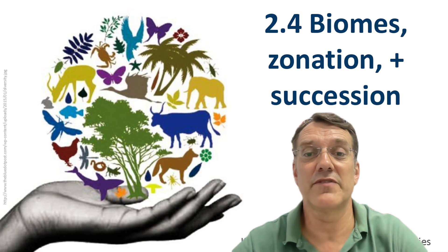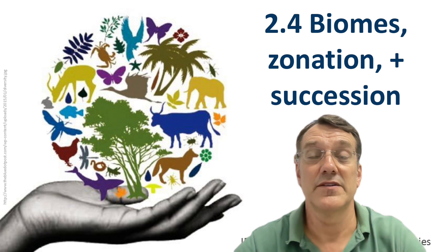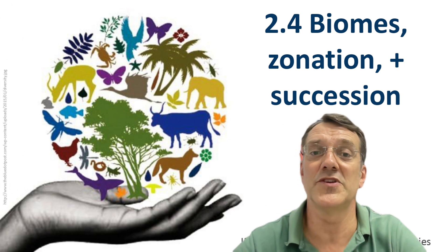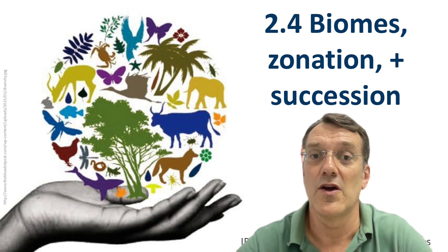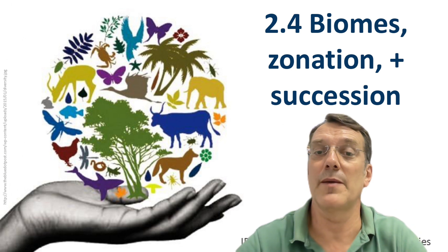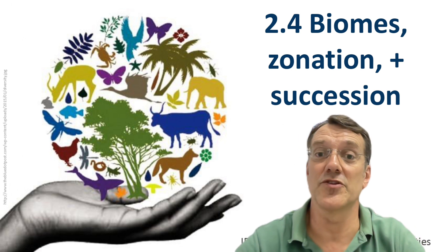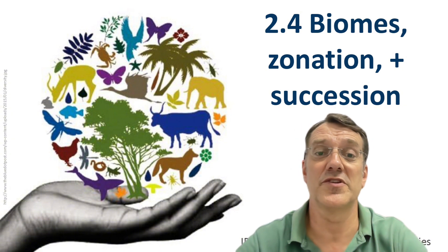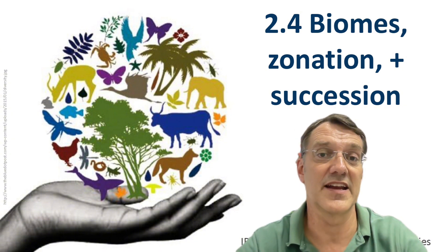Welcome to another IB Environmental Systems and Societies video. Today's topic is 2.4 Biomes, Zonation, and Succession. We'll examine how climate determines biome distribution, how communities change across environmental gradients, and how ecosystems develop over time. Let's get into it.